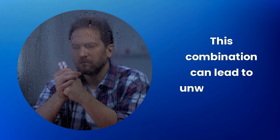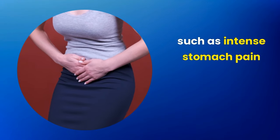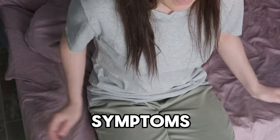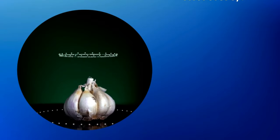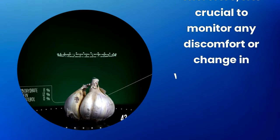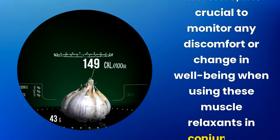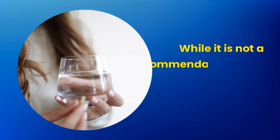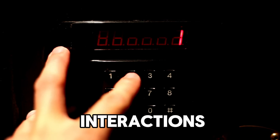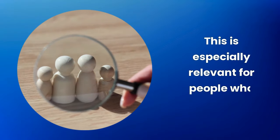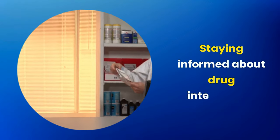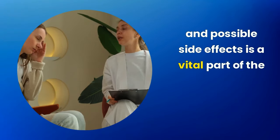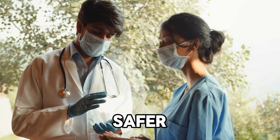This combination can lead to unwanted side effects, such as intense stomach pain and a general feeling of weakness. Such symptoms can be a sign that the body is reacting negatively to the interaction between garlic and the medication. Therefore, it is crucial to monitor any discomfort or change in well-being when using these muscle relaxants in conjunction with garlic. While it is not a recommendation to completely avoid these medications, it is advisable to use them with caution and be aware of possible interactions. This is especially relevant for people who frequently resort to these relaxants to relieve muscle tension. Staying informed about drug interactions and possible side effects is a vital part of the responsible use of any medication, thus ensuring a safer and more effective treatment.